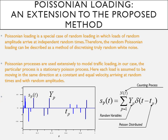Poissonian loading is a special case of random loading in which loads of random amplitudes arrive at random independent times, although in our case they are all moving at the same speed in order to most closely model traffic loading.